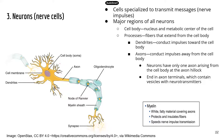Next, we're going to look at how neurons can control muscles and how your brain can signal the skeletal muscles to contract and move the body.